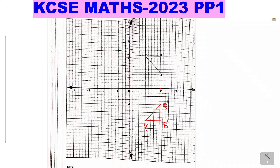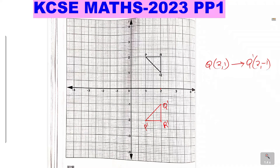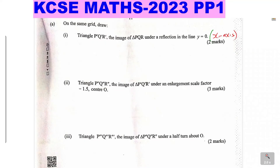An important thing to note: look at the coordinates. For example, Q has coordinates (2, 1). Under reflection in the x-axis, it is mapped to Q' at (2, -1). Notice that under reflection in the x-axis, the y-coordinate changes sign while the x-coordinate remains constant. This applies to all the other points P and R as well. That completes Part A.